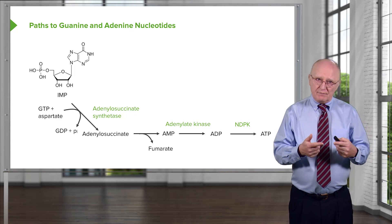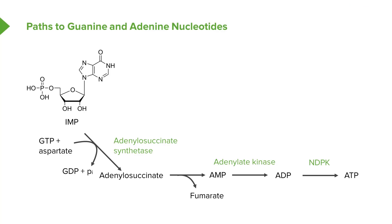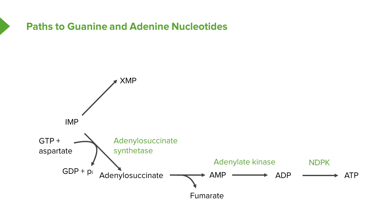That completes our synthesis to get to the adenosine nucleotides. Now let's follow the synthesis to make the guanosine nucleotides. In these reactions, we see that IMP is converted into XMP — that's xanthine monophosphate, which is what the X stands for. The first step of that process is actually an oxidation: NAD gains the electrons and becomes NADH, and XMP is the resulting product. The enzyme catalyzing that reaction is IMP dehydrogenase, and that too is an important enzyme for regulation.